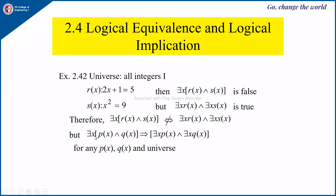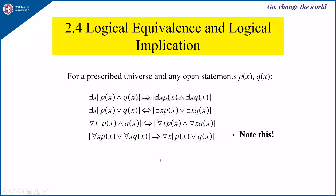But note that ∃x[p(x) ∧ q(x)] implies ∃x p(x) ∧ ∃x q(x) for any p(x) and q(x) and any universe. For a prescribed universe and any open statements p(x) and q(x), these are the important logical equivalences and implications: ∃x[p(x) ∧ q(x)] implies ∃x p(x) ∧ ∃x q(x), which we have already seen.